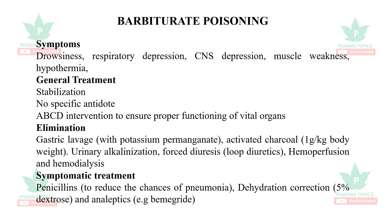Symptomatic treatment includes management of infections with penicillins for pneumonia, dehydration with 5% dextrose in saline. CNS stimulants — analeptics such as bemigride may be used. This is barbiturate poisoning.